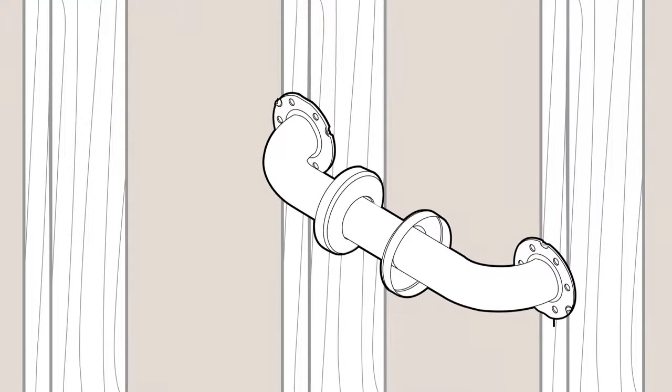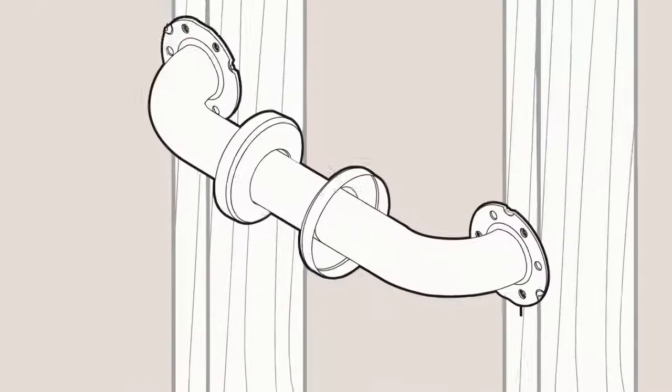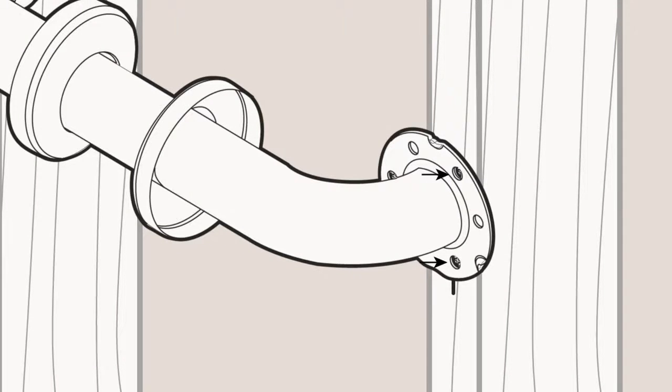Attach the mounting posts and grab bar to the wall studs using the 2-inch wood screws provided. 2 of the 3 screws must be mounted into a wall stud. Securely tighten all screws with a screwdriver.